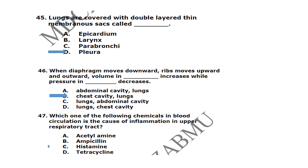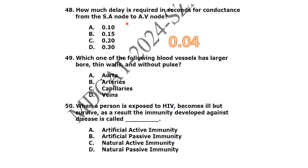Which one of the following chemicals in blood circulation is the cause of inflammation in the upper respiratory tract? It is histamine. How much delay is required in seconds for conductance from the SA node to the AV node? Which one of the following blood vessels has a larger bore, thin walls, and no pulse? It is the veins.